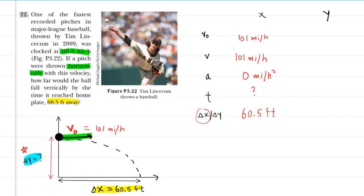Now for the y direction: because the ball is thrown initially horizontally, the initial velocity in the y direction is zero miles per hour — there is no vertical motion at the initial release of the ball. The final velocity in the vertical direction is unknown; it will be changing due to the influence of gravity, which accelerates the ball at negative 9.8 meters per second squared. The time interval is also unknown, and we are looking for the vertical displacement delta y.